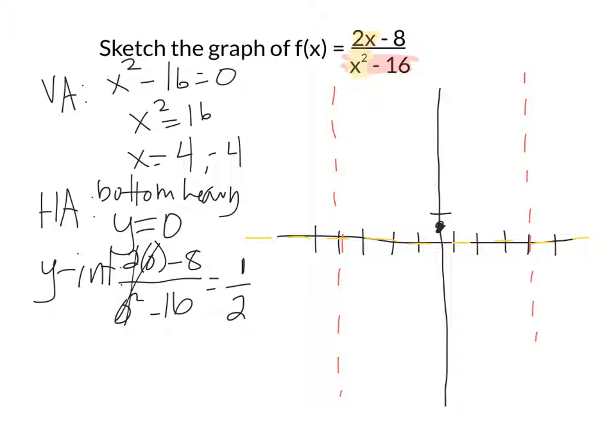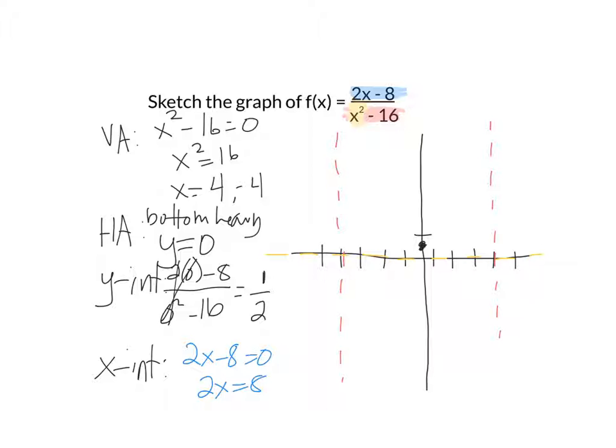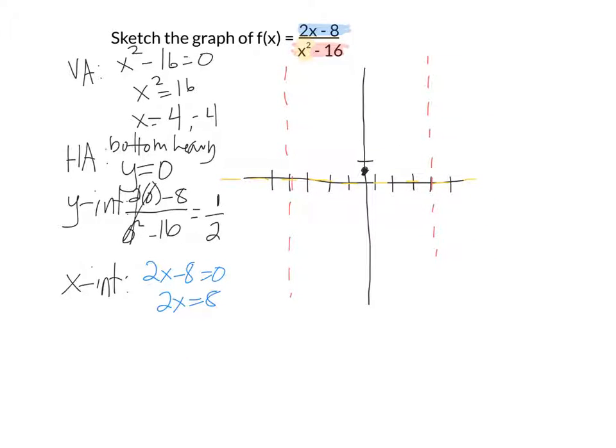Next we look for our x-intercept. To figure out the x-intercept, we look at the numerator and solve it. We have 2x minus 8 equals 0, so 2x equals 8. If I divide both sides by 2, I get an x-intercept of positive 4.